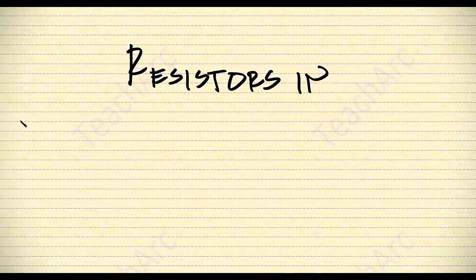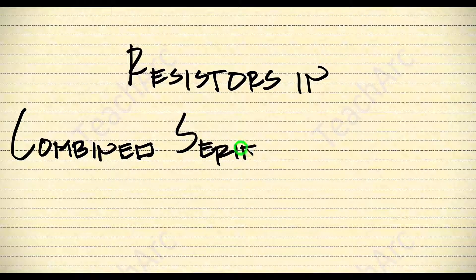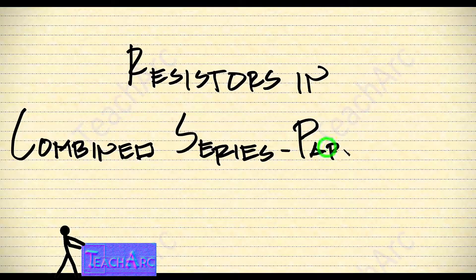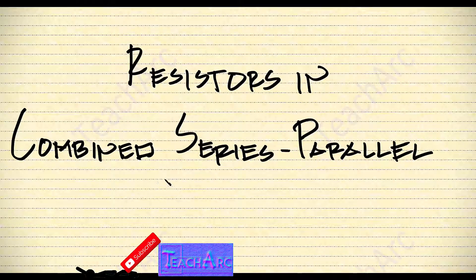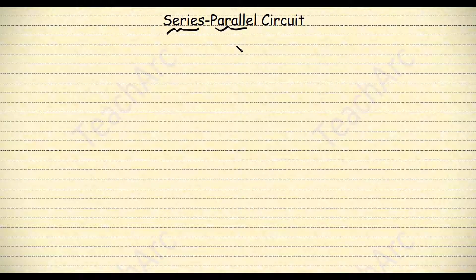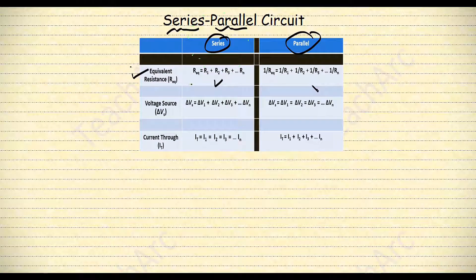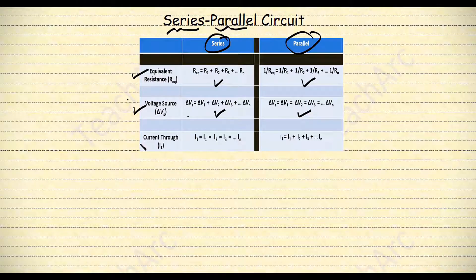Simplifying series-parallel circuits is proven to be a difficult task for some. In this video, I will be providing not one but two methods of simplifying resistors in a combined series-parallel circuit. But before that, let's not forget how to solve for equivalent resistance for resistors in a series circuit or in a parallel circuit, as well as the voltage source and the total current running through the circuit.